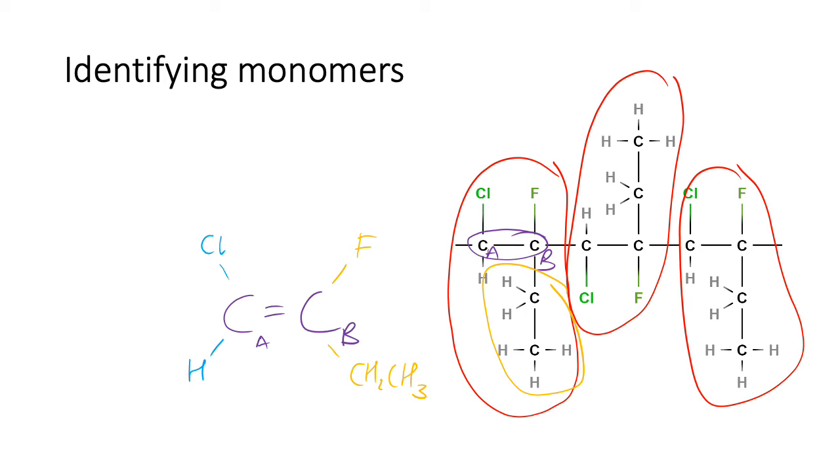So I would name it. What would I name it? Here is the longest chain. It's a four, so it's a butene. It's a 1-butene because the double bond is on the first carbon.